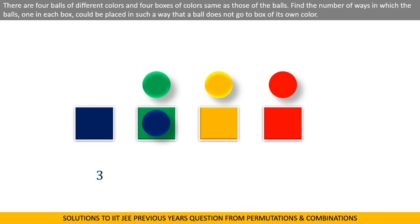Now we are left with yellow and red colored balls. In this situation, the yellow colored ball has only one option since it cannot go to the yellow colored box. Hence it can be placed in a different colored box in one way only.